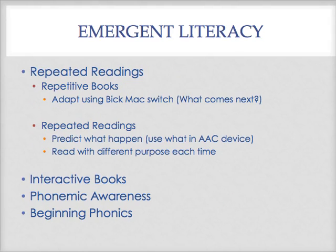Repeated readings or repetitive books can be adapted using a Big Mac switch — a student activates the switch to read the repetitive ending of the book, allowing them to participate. You can also use an AAC device to predict what happens next, with multiple devices programmed or a step-by-step device that reads a different statement each time the switch is activated. Interactive books — including computer books where, for example, when the wolf blows down a house in the Three Little Pigs, the house actually falls on screen — help students see the story come to life.